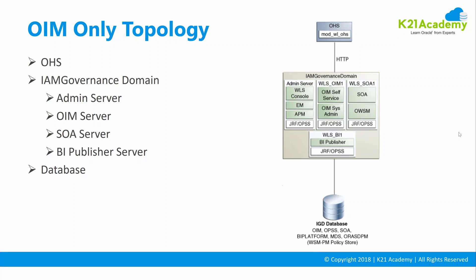Or you have a third topology where you have Oracle Identity Manager, Access Manager, and Oracle Mobile Security Suite. I'm going to explain these topologies with a diagram. In the Oracle Identity Manager topology, you have an Identity Governance WebLogic domain. In module 2, we covered Oracle Fusion Middleware — there is an admin server and managed servers. This topology has only the components required for identity governance.